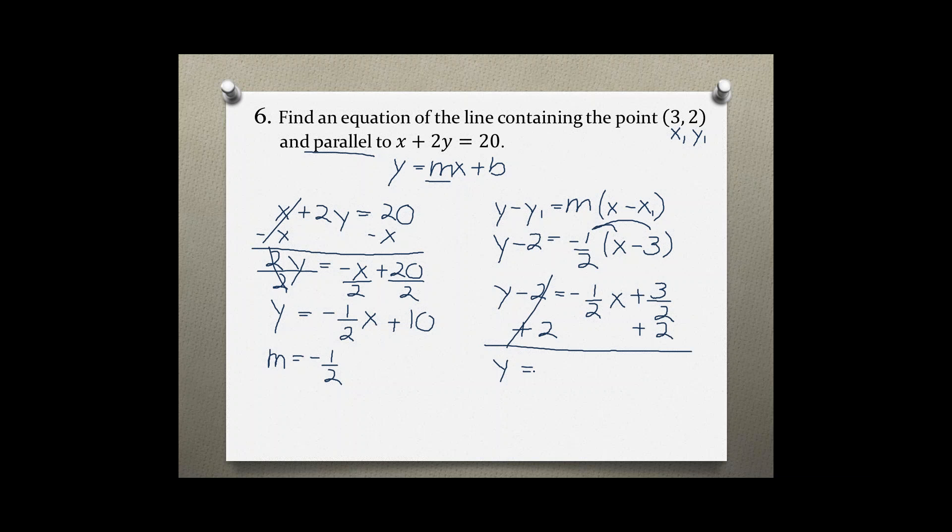y = -1/2x + 7/2. This is the equation of a line that contains the point (3, 2) and is parallel to the equation x + 2y = 20.